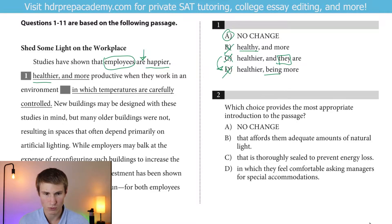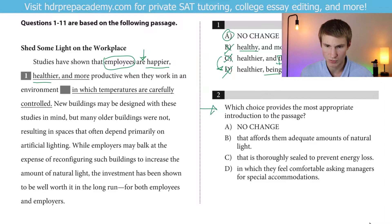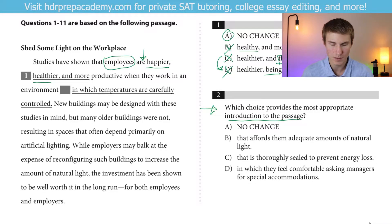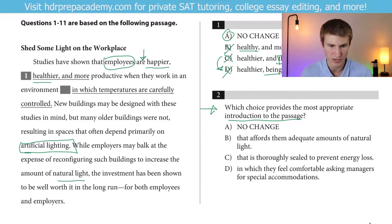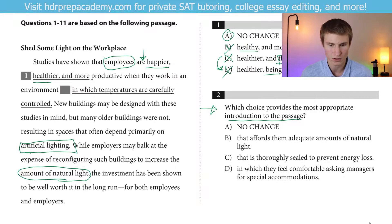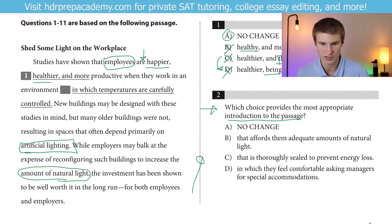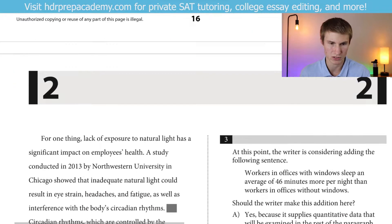We have 'more productive when they work in an environment in which temperatures are carefully controlled.' We're asked for which choice is the most appropriate introduction to the passage. So we have to read on to get more context before we answer that. New buildings may be designed with these studies in mind, but many older buildings were not, resulting in spaces that often depend primarily on artificial lighting. So it looks like I'll be talking about lighting. I'll come back to question 2 after I get some more context — it's probably going to be something dealing with light.